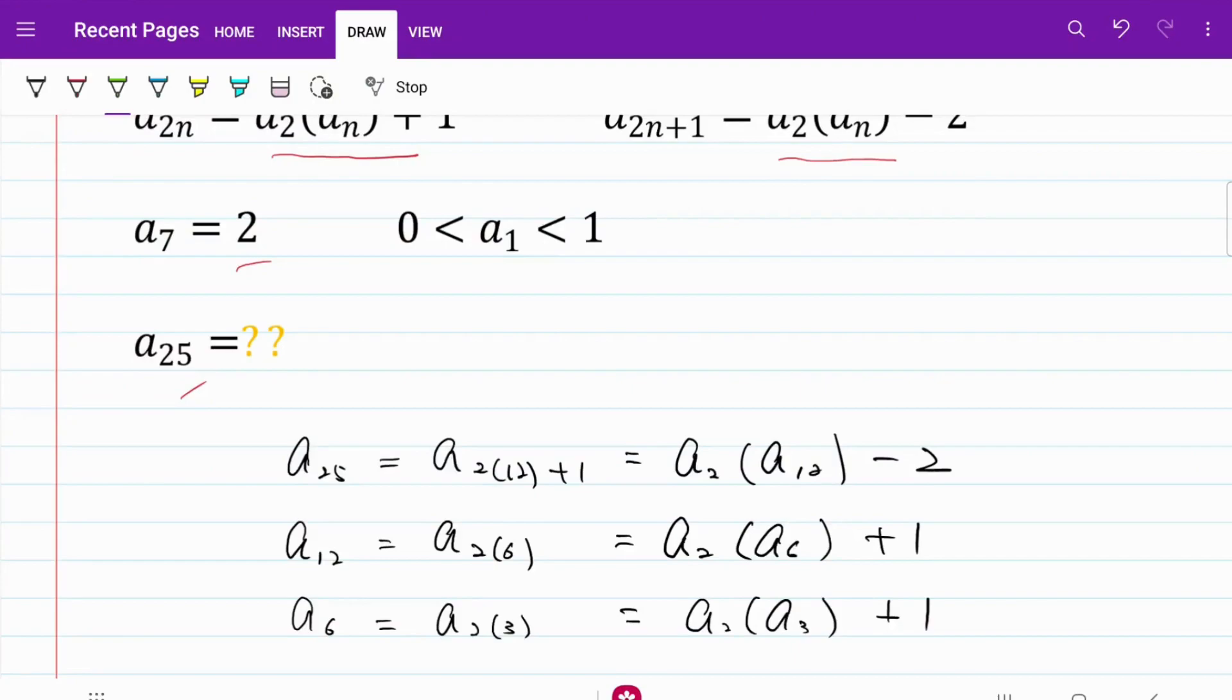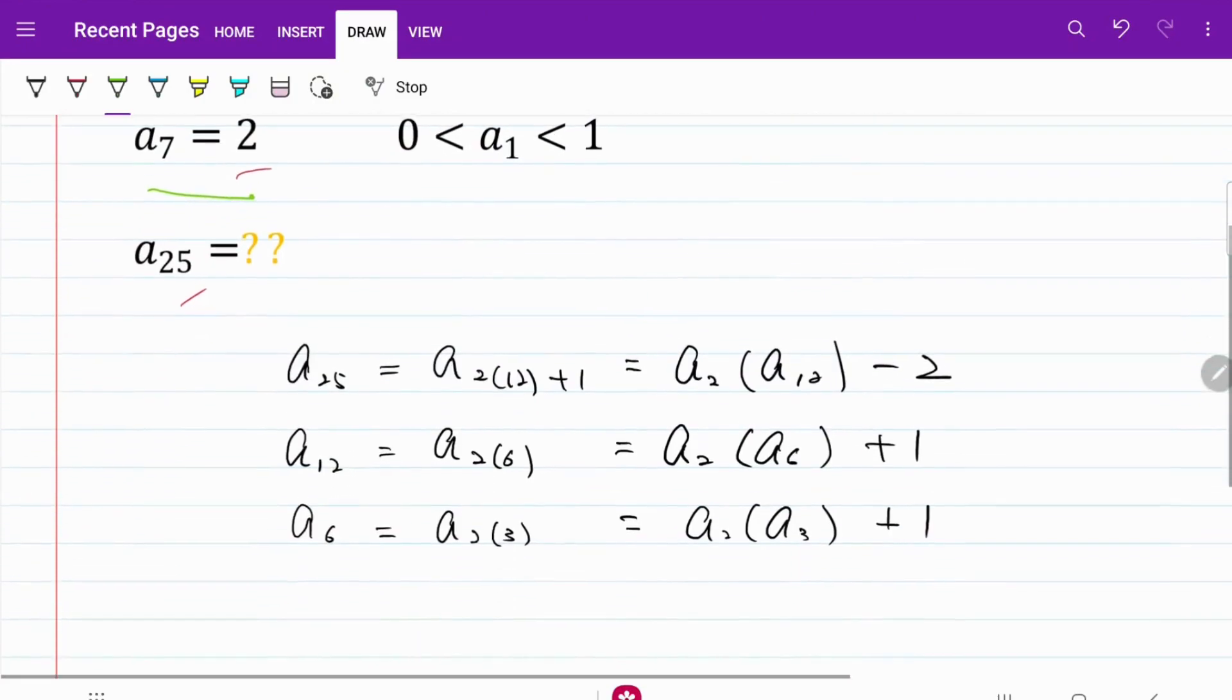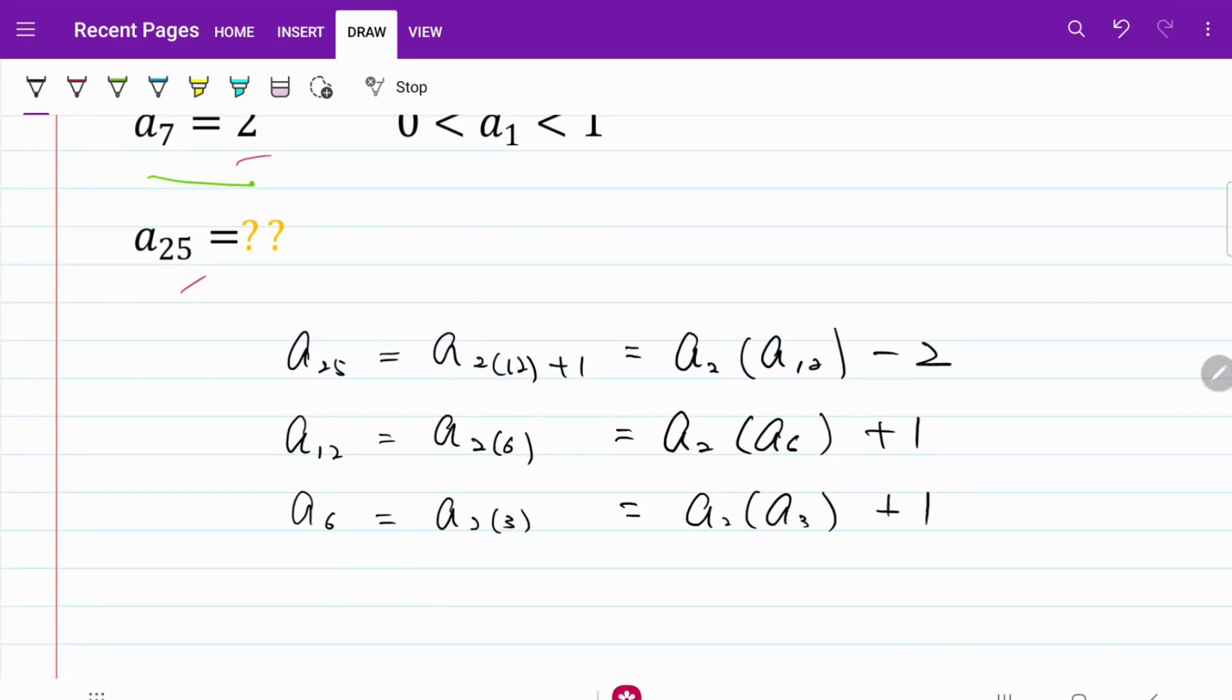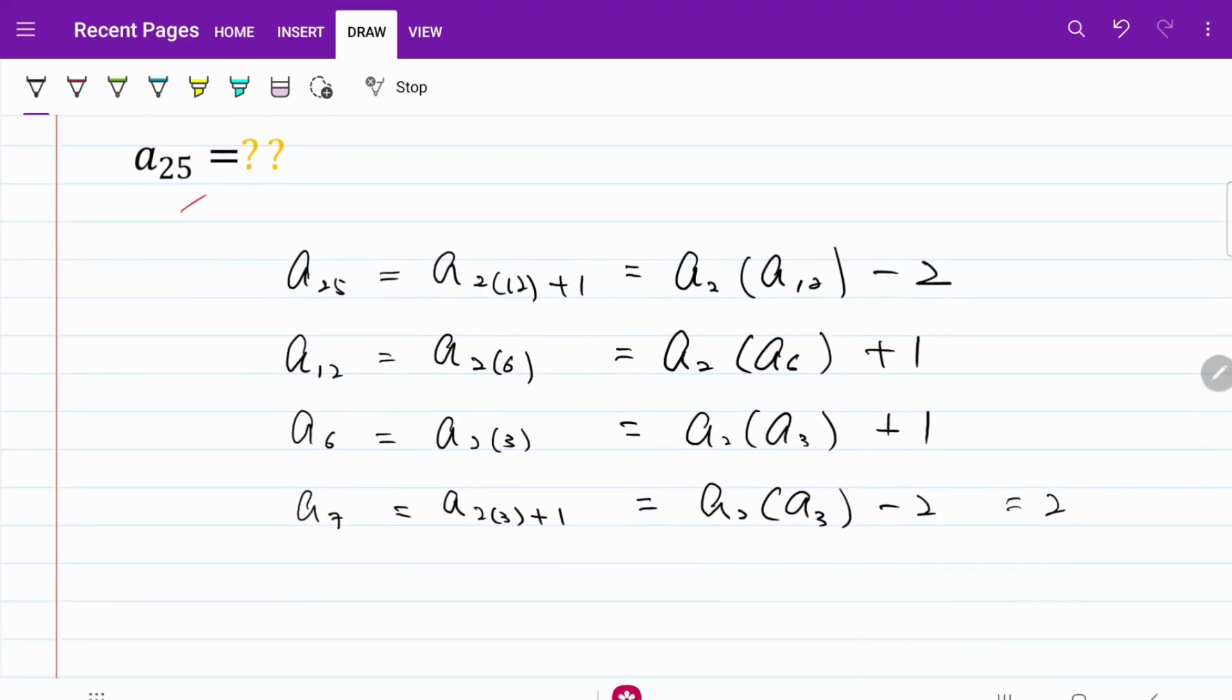At this point, let me make use of the information that is given, which is A7 = 2. So I'm going to express A7 as A2(3) + 1, which is equal to A2 multiplied by A3 - 2. We know A7 to be equal to 2, so let's use that to work out our product of A2 multiplied by A3.